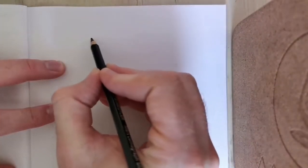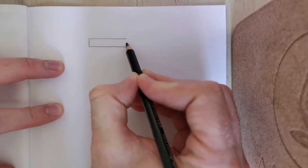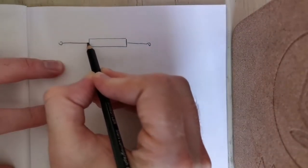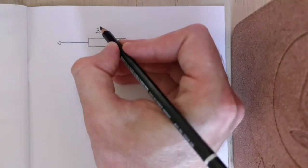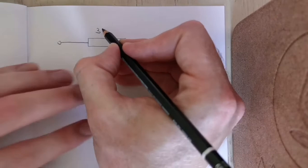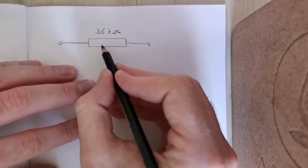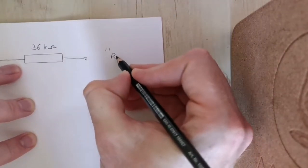In the question we've got this component here. One of the first things you need to be able to do is work out what is this component. 36 kilo ohms. Now this shape or symbol represents a component known as a resistor.